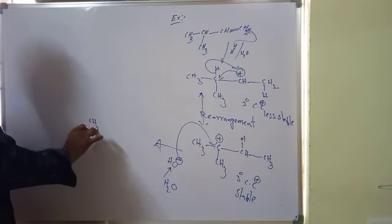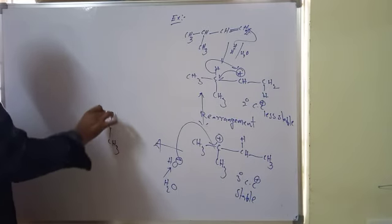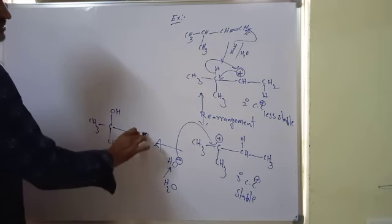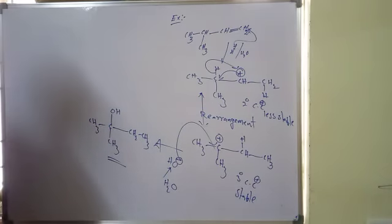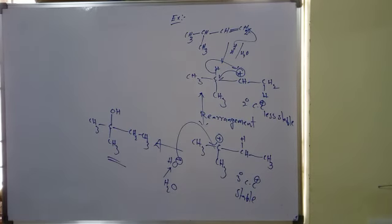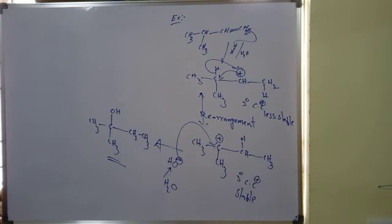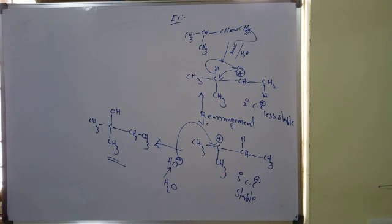After formation of the tertiary carbocation intermediate, the nucleophile OH⁻ (from water) attacks, giving CH₃C(OH)(CH₂CH₃)CH₃ as the product. In summary: for alkene-to-alcohol addition reactions, the mechanism proceeds through carbocation intermediate formation. Rearrangements are possible — primary to secondary, secondary to tertiary, or allylic/benzylic. After rearrangement, OH⁻ attacks to give the alcohol product.